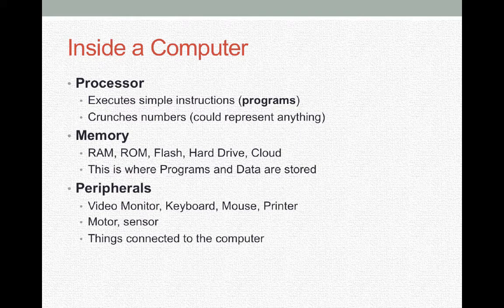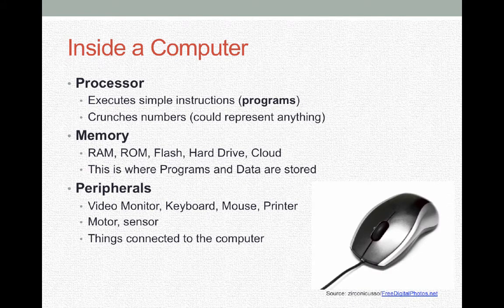The peripherals of a computer are things that help people communicate with the computer. These are things like a video monitor, a keyboard, a mouse, or a printer. They can also be input-output devices like a motor or a sensor that a computer might use to output or input data — essentially everything that is connected to the computer.